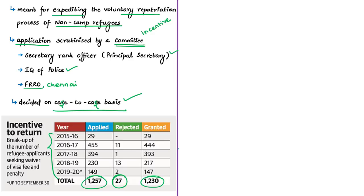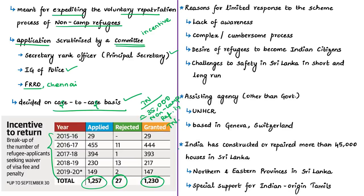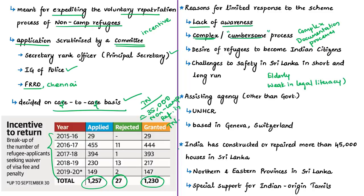If we consider that the number of Sri Lankan Tamil refugees in Tamil Nadu is around 35,000, the limited response to the scheme is noteworthy. Reasons for limited interest include lack of awareness among non-camp refugees, a cumbersome documentation process, and the vulnerability of some refugees — such as elderly individuals, differently-abled persons, those with loss of original certificates, or those weak in legal literacy. Non-availability of a sufficient framework to address the concerns of these vulnerable refugees is also a reason why even those considering repatriation may not come forward to apply for the waiver.